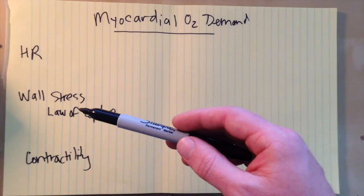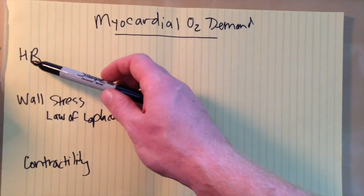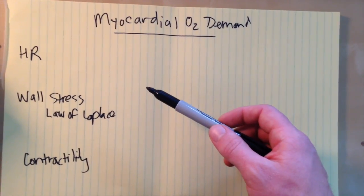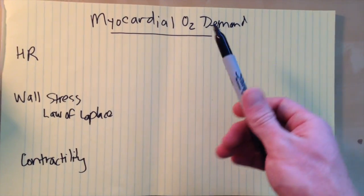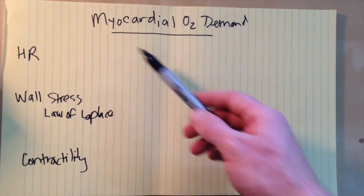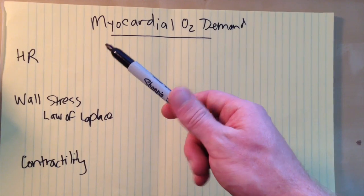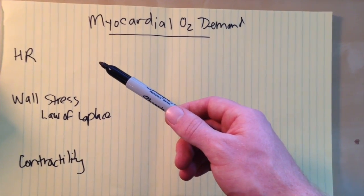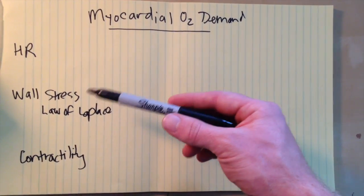There are three main factors I'd like to talk about today. Number one is the heart rate. This is probably the easiest to understand. As we saw in the video about oxygen supply, the heart rate and increased heart rate serves to decrease the myocardial oxygen supply by decreasing the diastolic filling time.